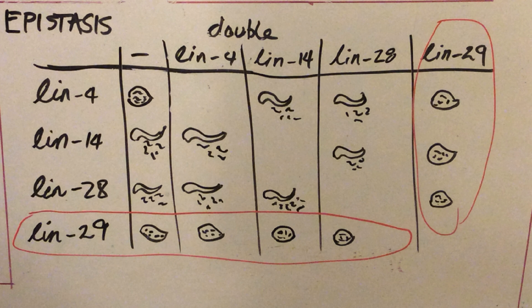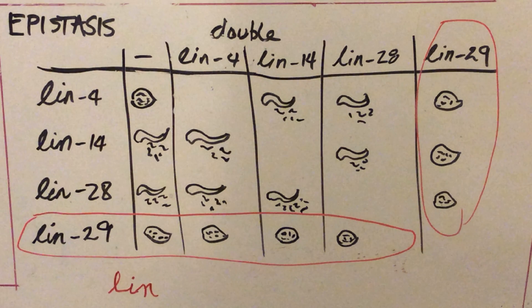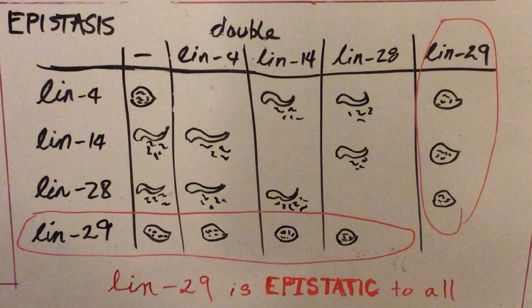Thus, LIN-29 is epistatic to all the genes that we are testing. Now looking at LIN-14 and 28, we see that they are only epistatic to LIN-4.